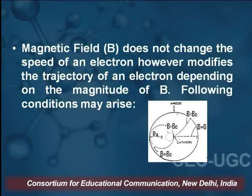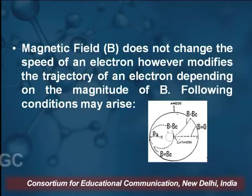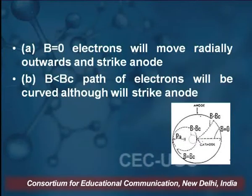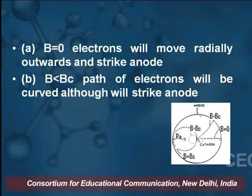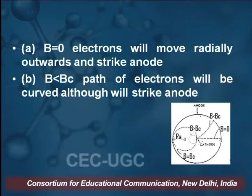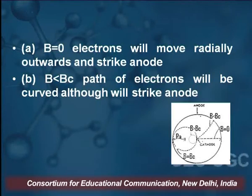Here on the screen we have a diagram which explains the various positions when various magnetic fields are applied. If we take B equal to 0, in the first condition the electron will move radially outwards and strike the anode. At the anode we applied the voltage and then the electrons will be accelerated.